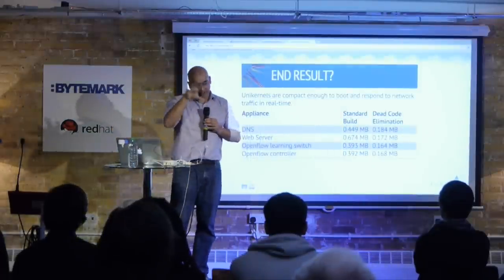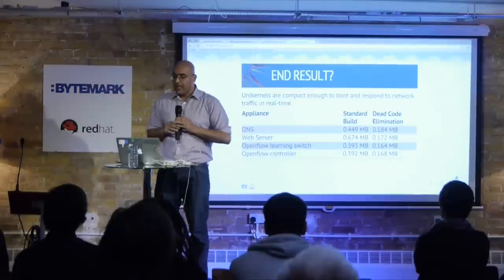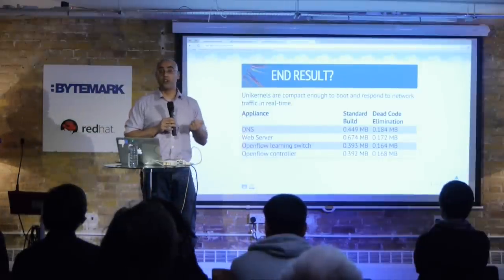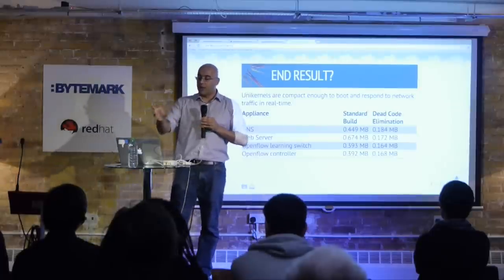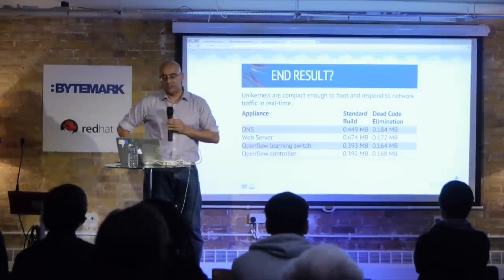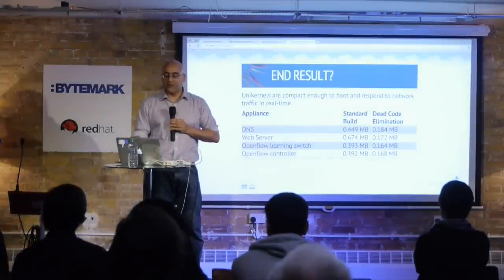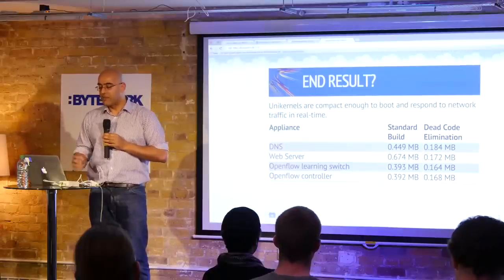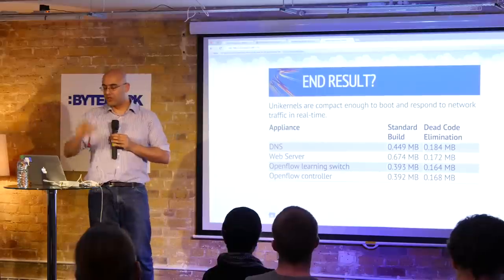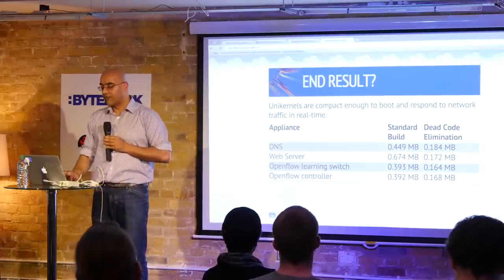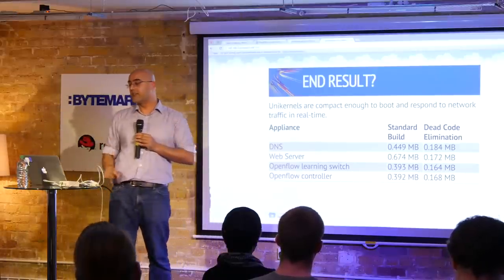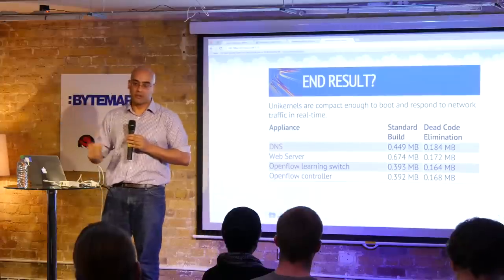These unikernels just boot and respond to network traffic in real time. Looking at the size of these binaries — these are realistic examples from some of our self-hosting infrastructure — with the standard OCaml build they're about half a megabyte in size. By doing a little more exotic dead code elimination and intra-module analysis, we can get them down to hundreds of kilobytes. This DNS server is fully type-safe — it includes all the device drivers and everything needed to serve a top-level domain. The attack surface is drastically reduced without any significant loss of functionality.